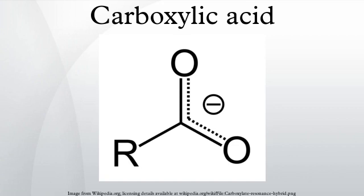Specialized reactions: as with all carbonyl compounds, the protons on the alpha carbon are labile due to keto-enol tautomerization. Thus, the alpha carbon is easily halogenated in the Hell–Volhard–Zelinskii halogenation. The Schmidt reaction converts carboxylic acids to amines. Carboxylic acids are decarboxylated in the Hunsdiecker reaction. The Dakin–West reaction converts an amino acid to the corresponding amino ketone. In the Barbier–Wieland degradation, the alpha-methylene bridge in an aliphatic carboxylic acid is removed in a sequence of reaction steps — in effect a chain shortening.